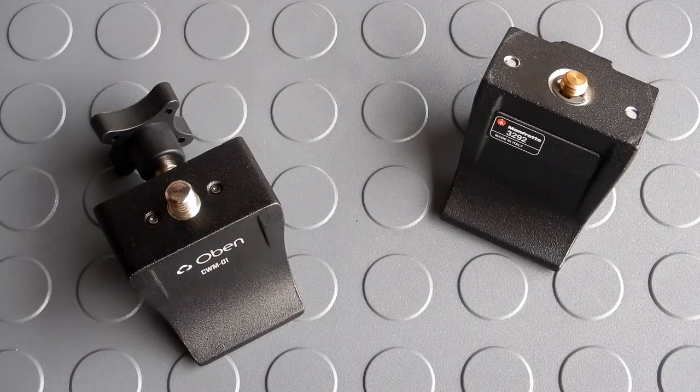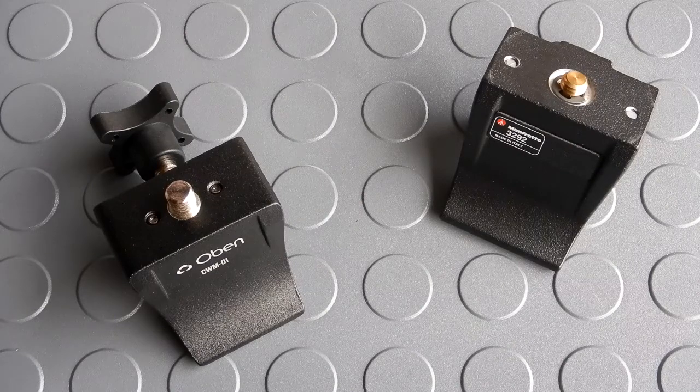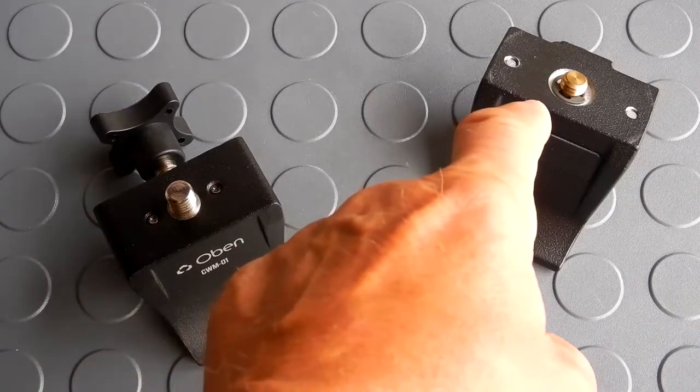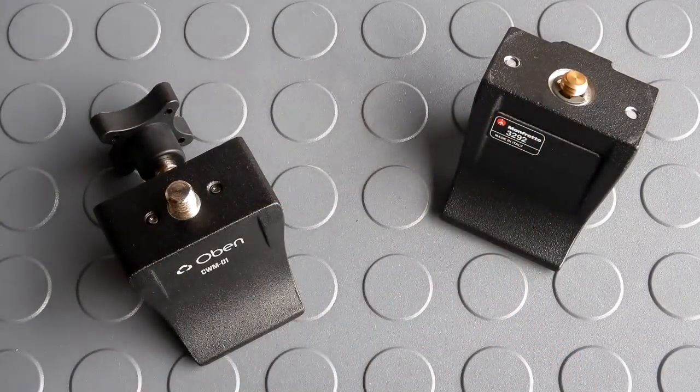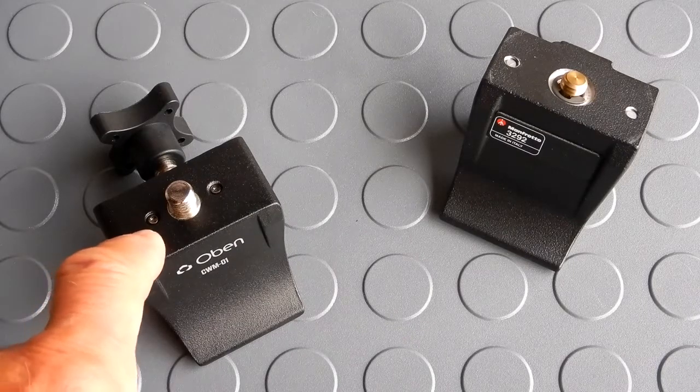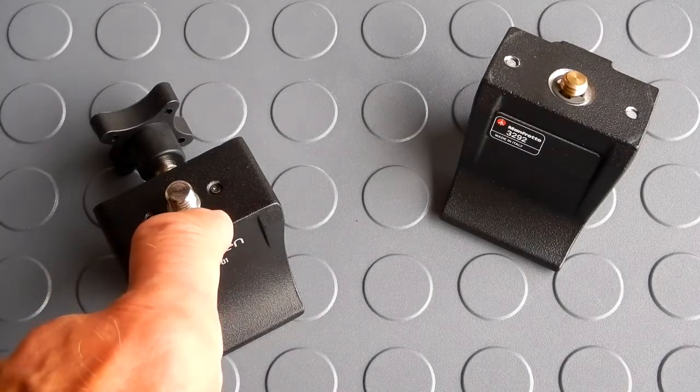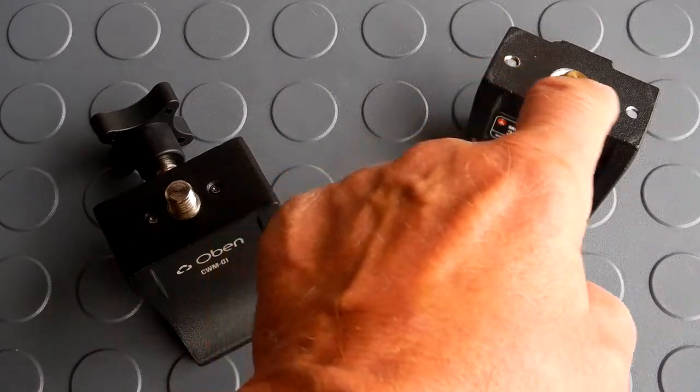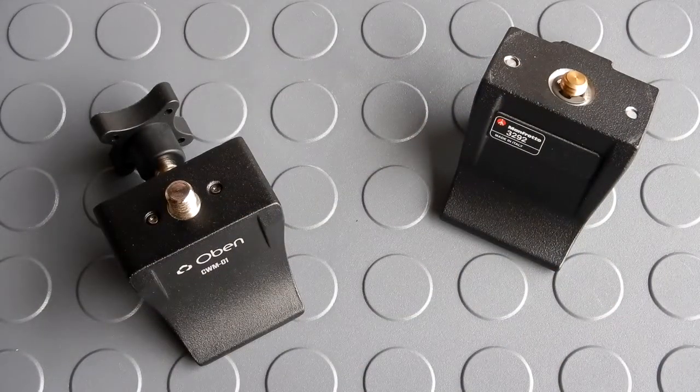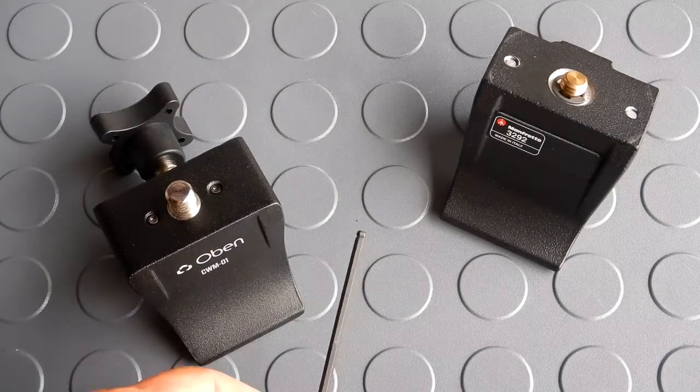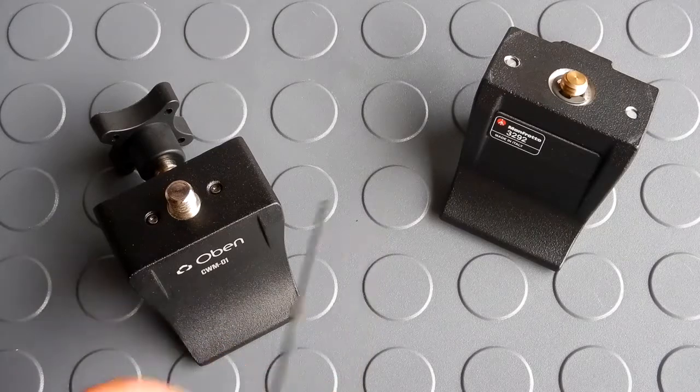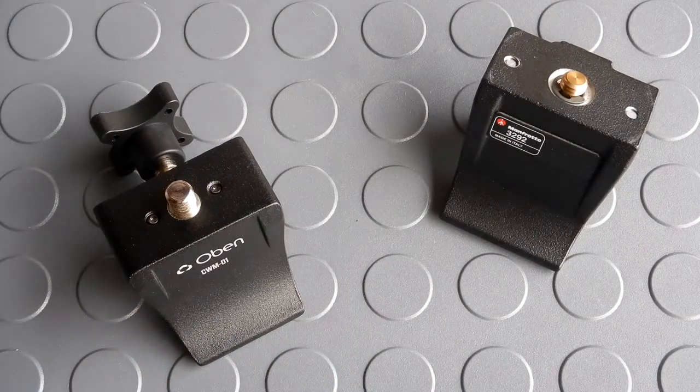So when it comes down to the locking screws, I much prefer the Oban over the Manfrotto because of the fact that it ships with the socket head cap screws, they're closer together so with a smaller ball head - and I'm just not a big fan of the slotted - I think you can get a much better grip when you're using an allen head wrench to tighten those down. But that's just my preference.